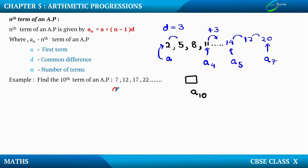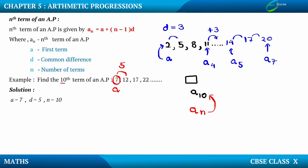We already have the value of a. The value of a is 7, that is the first term. Then we have the value of d as well. The value of d is 12 minus 7, which is 5. Since we want to find out the tenth term, we will consider n as 10. So: a = 7, d = 5, and n = 10.